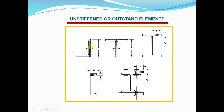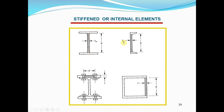These sketches show unstiffened (outstanded) elements. Elements shown in white or hatched are outstanded elements. The middle vertical plate of a T-section is an internal element. Outstanded and internal elements are distinguished: horizontal and vertical plates between sections are classified as internal elements, while projecting plates are outstanded elements.